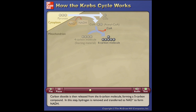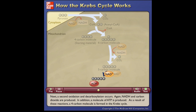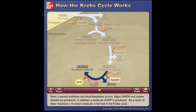Carbon dioxide is then released from the six-carbon molecule, forming a five-carbon compound. In this step, hydrogen is removed and transferred to NAD+ to form NADH. Next, a second oxidation and decarboxylation occurs, and again NADH and carbon dioxide are produced.